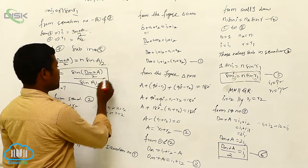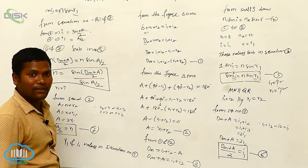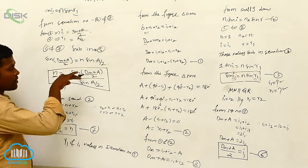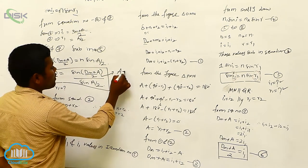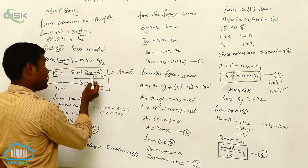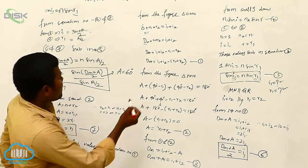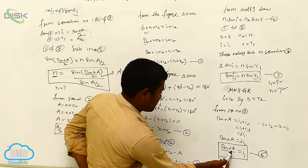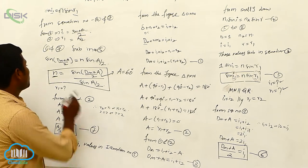This equation is called the refractive index of the prism, or refractive index of any material. Here, n is the refractive index of the prism, and a is the angle of the prism. If it is an equilateral triangle, the angle is definitely 60 degrees. From this we can also find the dm value — that is the minimum deviation.